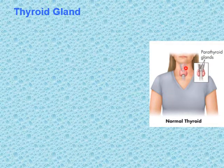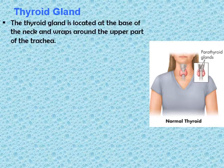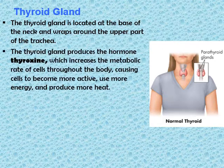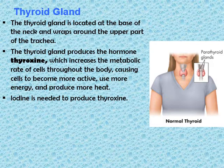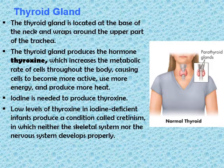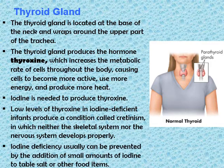The thyroid gland is located at the base of the neck and wraps around the upper part of the trachea. It produces the hormone thyroxine, which increases the metabolic rate of cells throughout the body, causing cells to become more active, use more energy, and produce more heat. Iodine is needed to produce thyroxine. Low levels of thyroxine in iodine-deficient infants produce a condition called cretinism, in which neither the skeletal system nor the nervous system develops properly. Iodine deficiency can usually be prevented by adding small amounts of iodine to table salt or other food items.